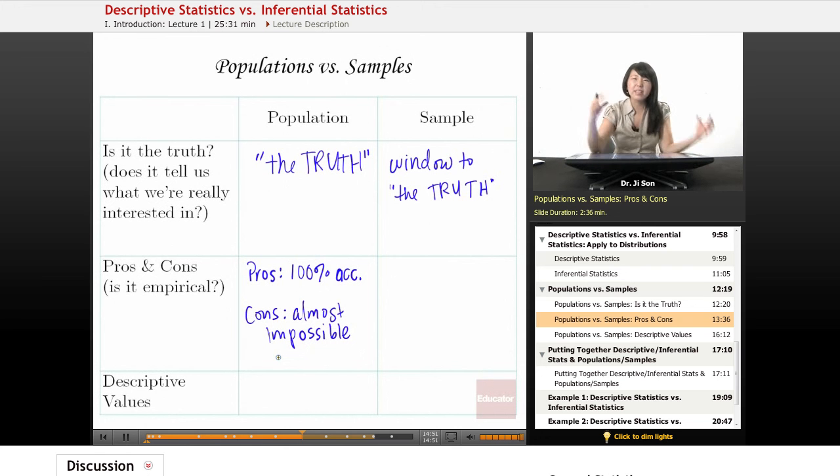Often in statistics books, they'll pick a small population. Like they'll say, consider all the people who attend your school. And they'll just shrink down the population so that you could actually think about it without sort of feeling like your mind is being blown. But in the real world, it's basically impossible to get the real truth.